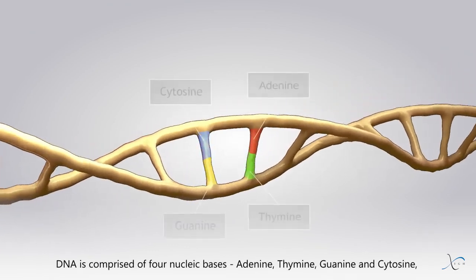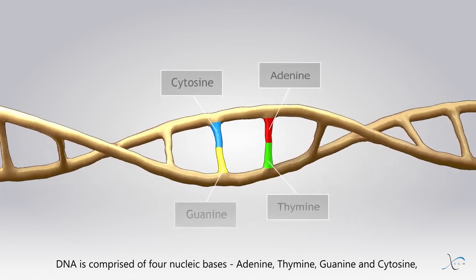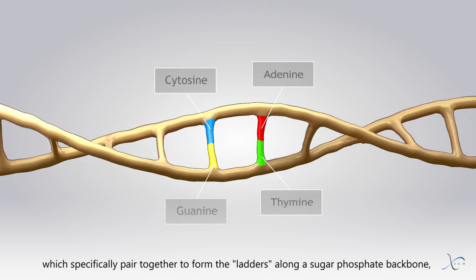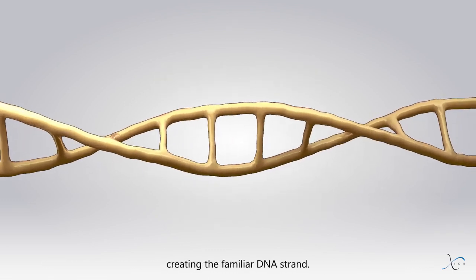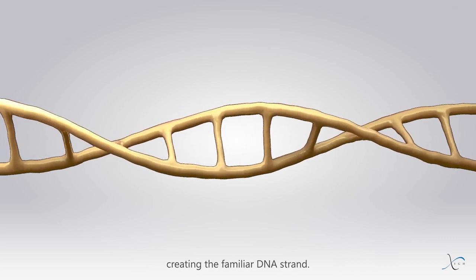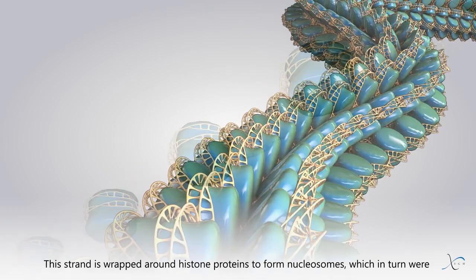DNA is comprised of four nucleic bases: adenine, thymine, guanine, and cytosine, which specifically pair together to form the ladders along a sugar phosphate backbone, creating the familiar DNA strand. This strand is wrapped around histone proteins to form nucleosomes.